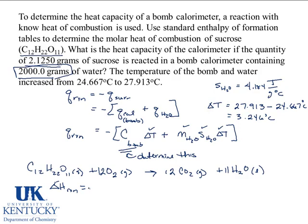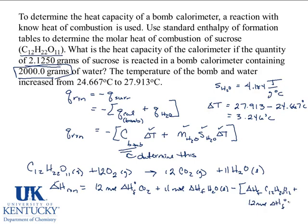So it would be 12 moles times the delta H of formation of carbon dioxide, plus 11 moles times the delta H of formation of H2O liquid, minus, so that's products minus reactants. We'd have to have the delta H of formation of C12H22O11, and 12 moles of the delta H of formation of O2. So we can go to the tables of these values here, and we can determine the delta H.